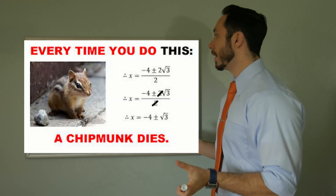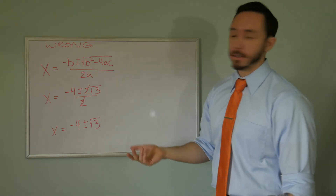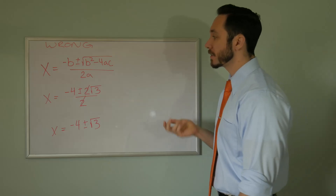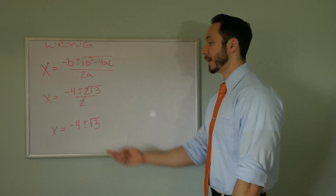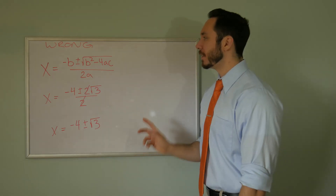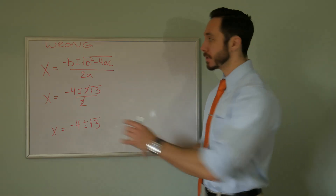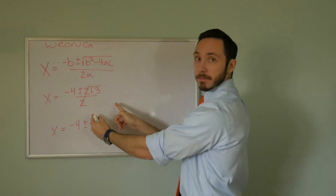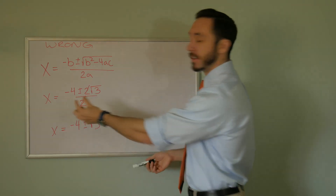The next one says: every time you do this, a chipmunk dies. We've got the quadratic formula in play — we don't know what the initial quadratic looks like, this is just what it's simplified to. I think there are two common reasons for this mistake. The first is they just say, hey, a two over two — awesome, I can cancel those out — and they get negative four plus or minus the root of three. You can't do that. Also, what sometimes happens is students will make the fraction bar in the quadratic formula progressively smaller and smaller with each step, until it no longer applies to that negative b up front.